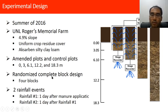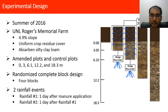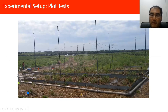We conducted two rainfall simulations. The first was conducted one day after the swine manure was land applied, and the second was conducted one day after the first rainfall. Because there are only 24 hours between land application and the first rainfall simulation, we are studying a nearly worst-case scenario in terms of contaminant loads in the runoff. At the end of the setback region, a trough collected runoff that was channeled into a container for sample collection. Five days after the second rainfall simulation, we collected soil samples from the plot.